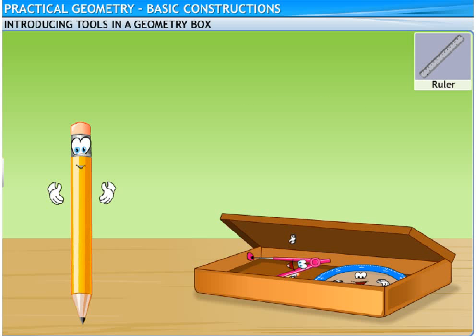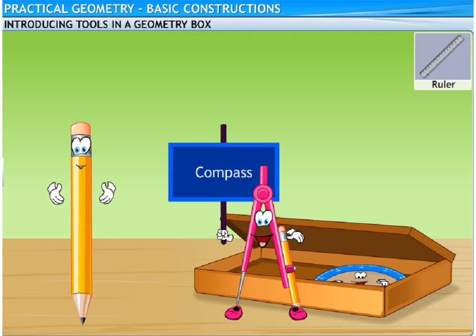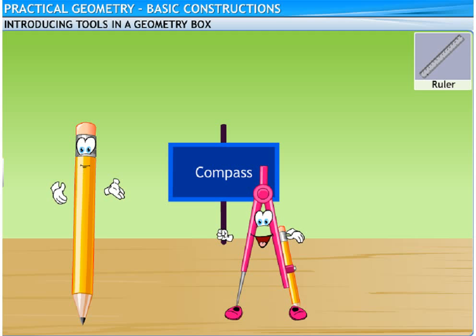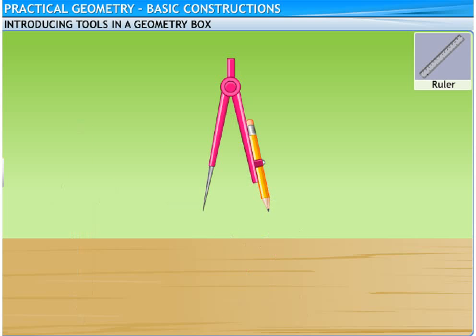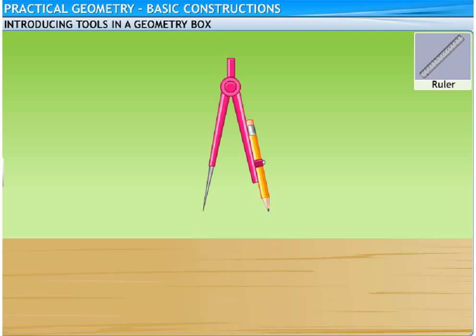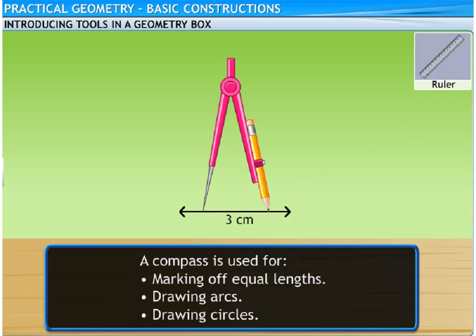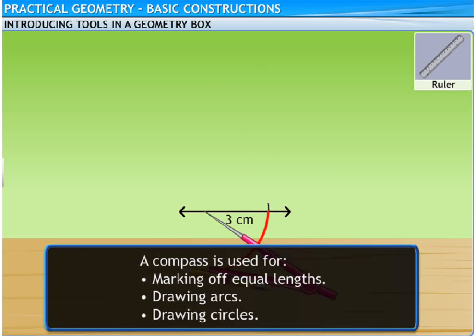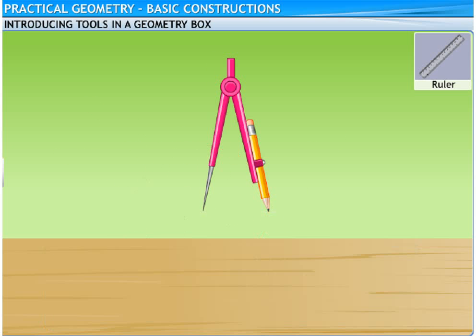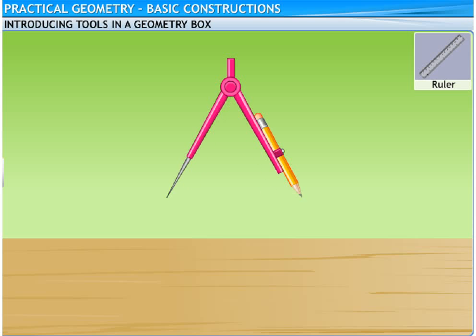Another important tool in your geometry box is the compass, also called a pair of compasses. It has two ends: one end holds a pointer, while the other end holds a pencil. The basic use of this tool is to mark off equal lengths, like a ruler. However, ideally, a compass is not used to measure lengths. The other uses of a compass are to draw arcs and circles. The required length can be set by adjusting its two ends.